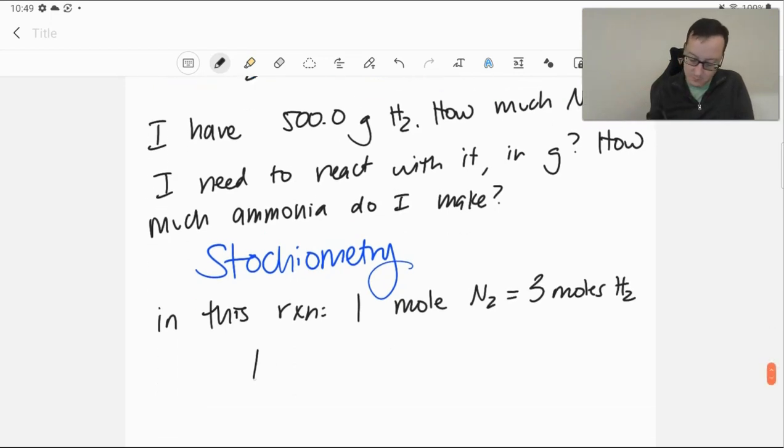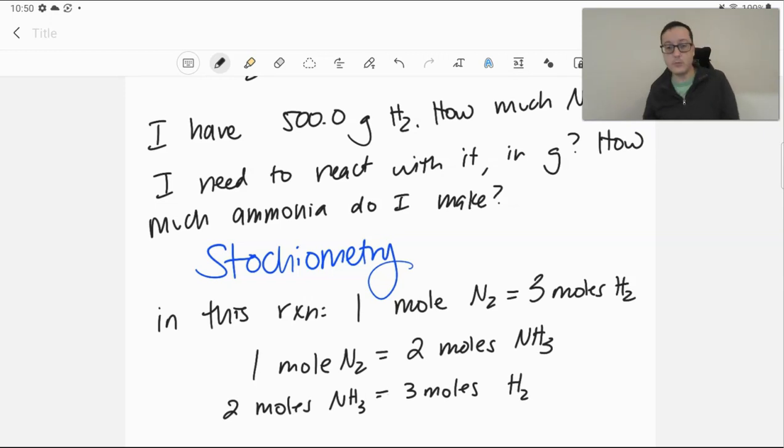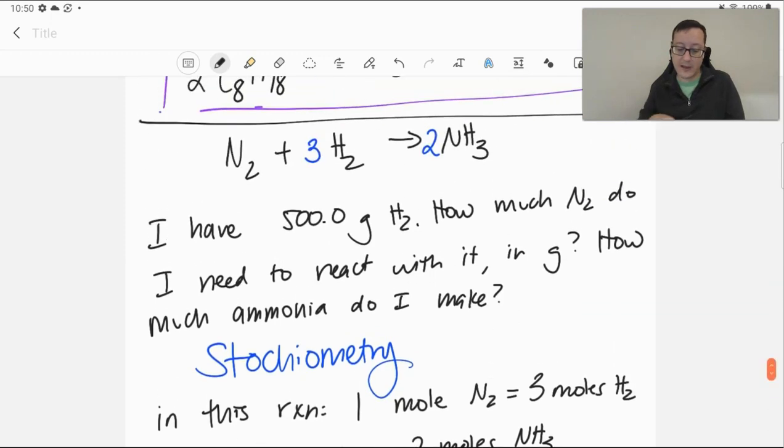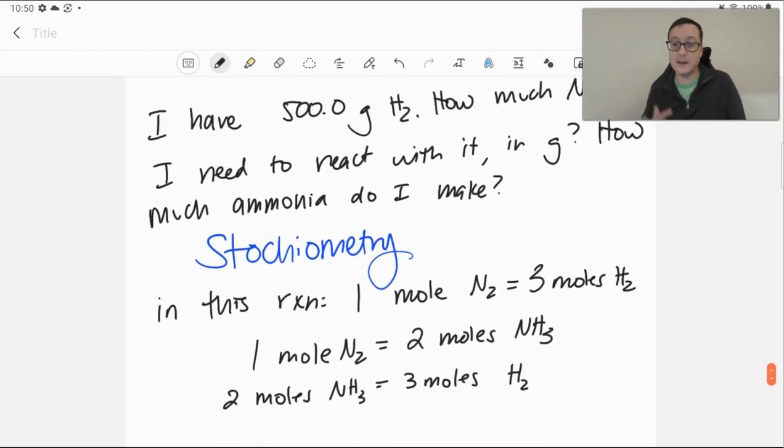From here, we also get that one mole of nitrogen is equal to two moles of ammonia. And, of course, through the transitive property, or just looking at the coefficients themselves, we get two moles of ammonia is three moles of hydrogen. So this is what the stoichiometry tells us. Because those are our reaction coefficients, we get these equalities out, whatever they happen to be. If your coefficients were the same, one mole of nitrogen is one mole of oxygen, whatever. That's also an equality to get out.